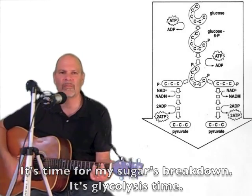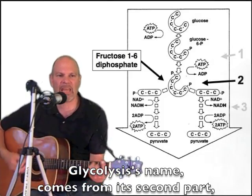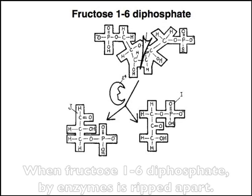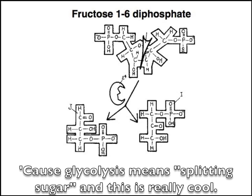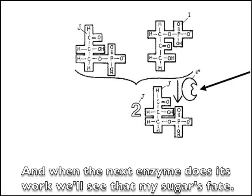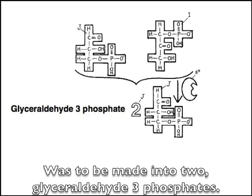Glycolysis's name comes from its second part, when fructose 1,6-bisphosphate is where enzymes strip it apart. Glycolysis needs to split the sugar, and this is really cool — this cleavage results in two three-carbon molecules. When the next enzyme does its work, we'll see that my sugar's fate was to be made into two glyceraldehyde-3-phosphates.